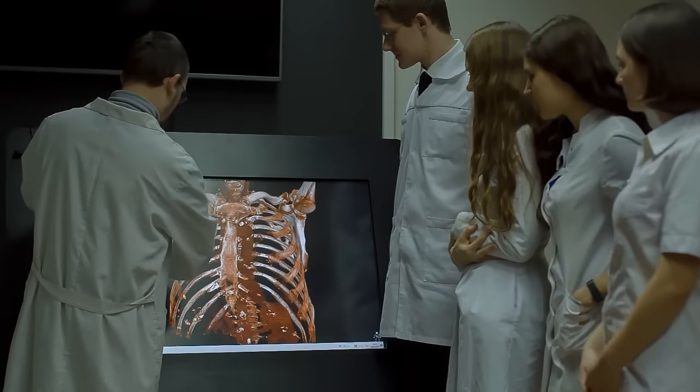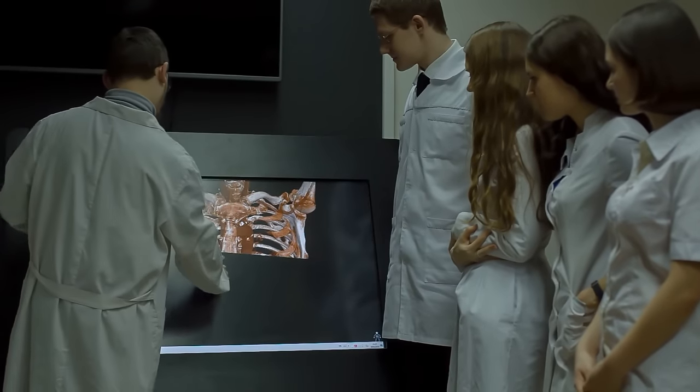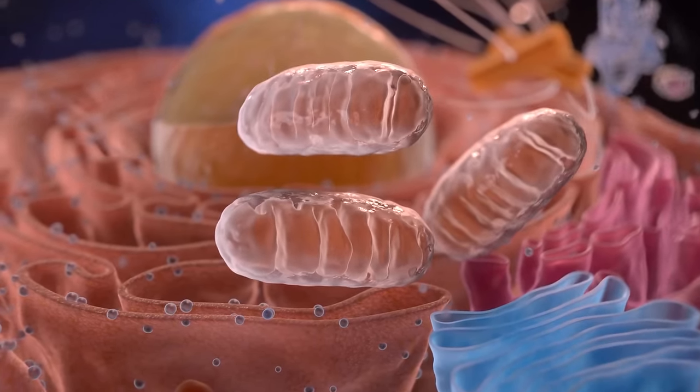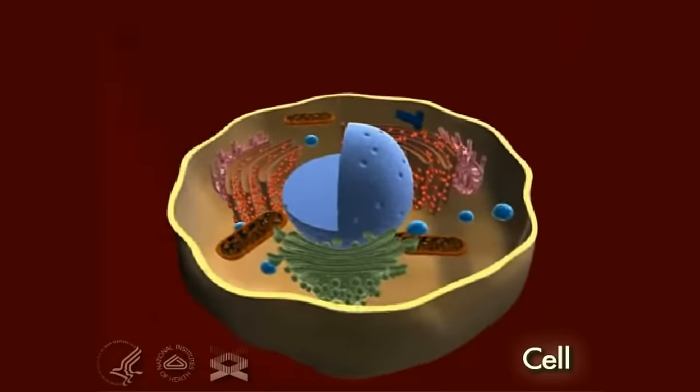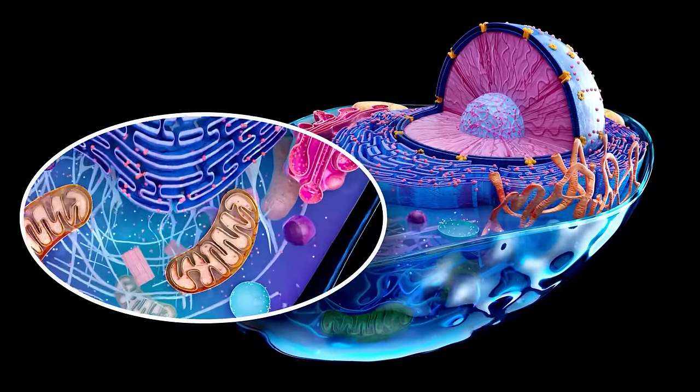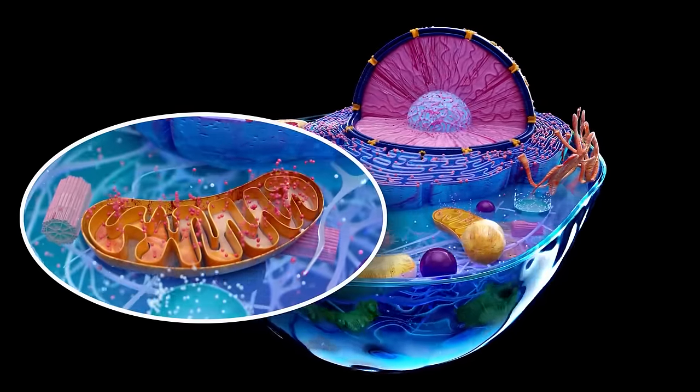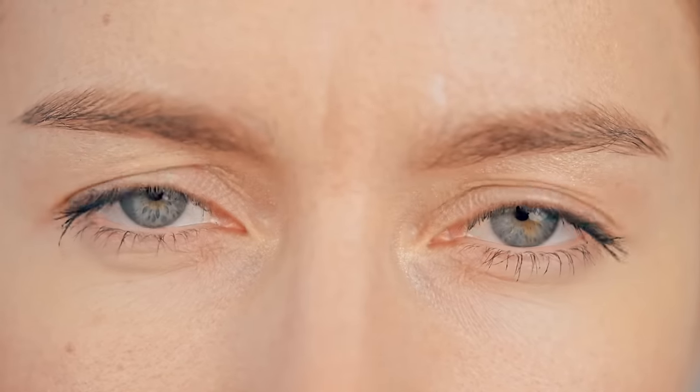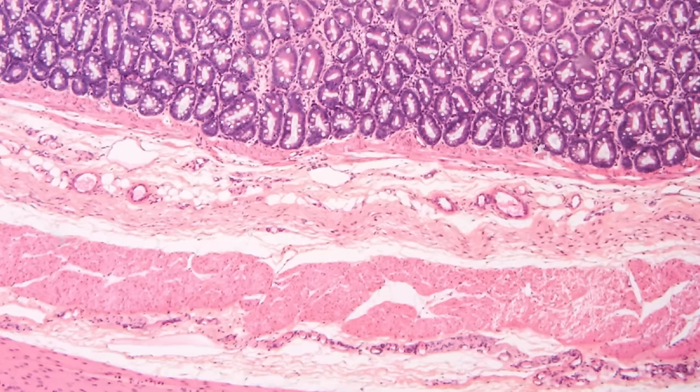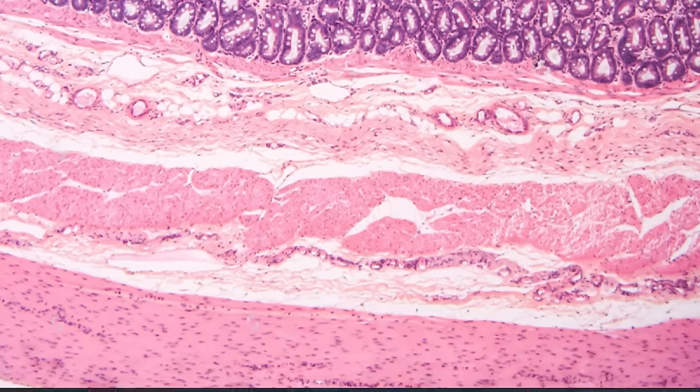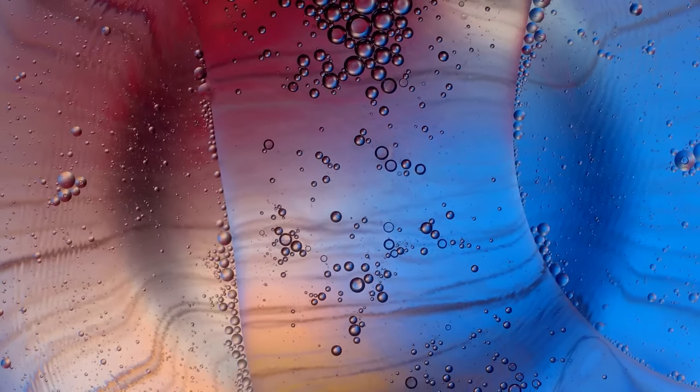As anyone who has gone to a biology class before will tell you, two things remain constant. The mitochondria are the powerhouse of the cell, and the cell is the building block of life. Taking things to a more advanced level, we begin to see just how intricate the cell really is, and how much it shapes who we are. The cell has another nifty trick up its sleeve.